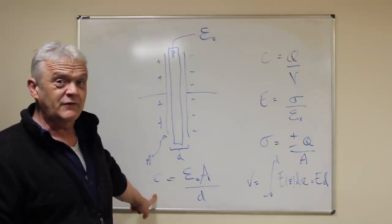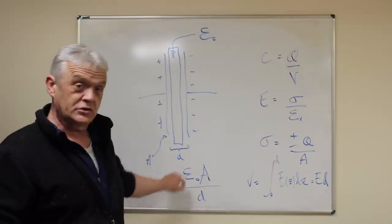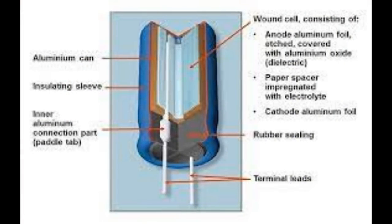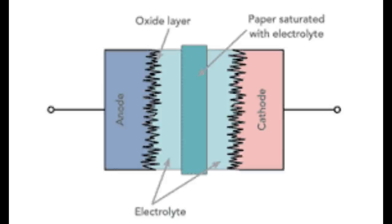If we want to make this big, we have three choices. We can make this really, really small, which is exactly what they do in electrolytic capacitors, because the distance is the distance of the oxide layer.